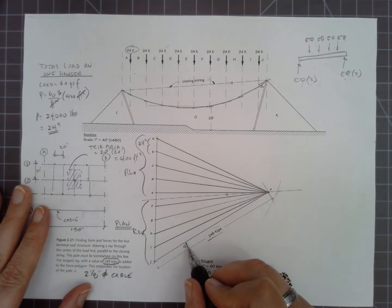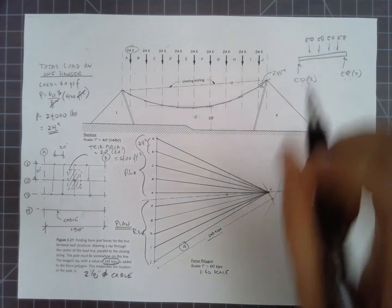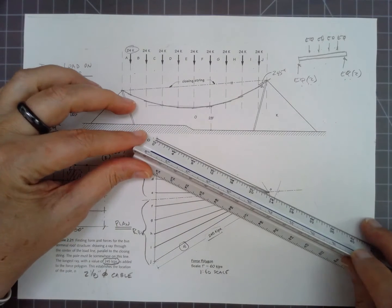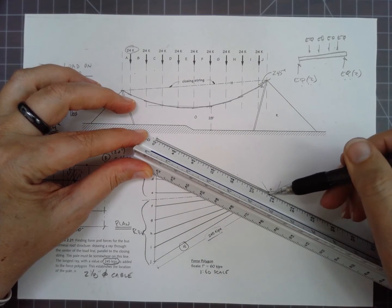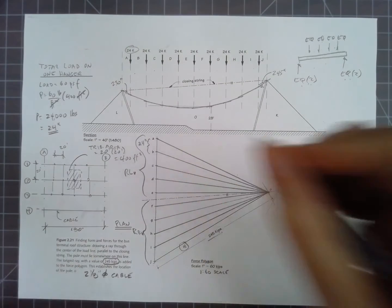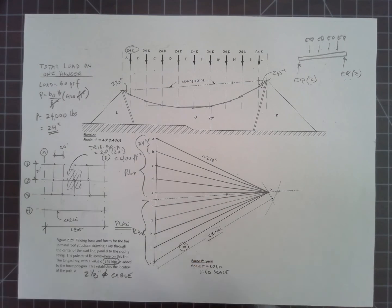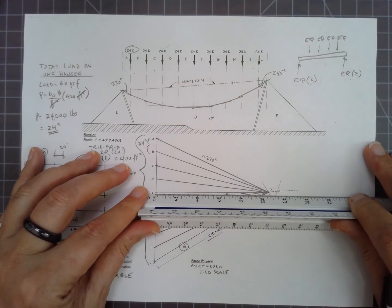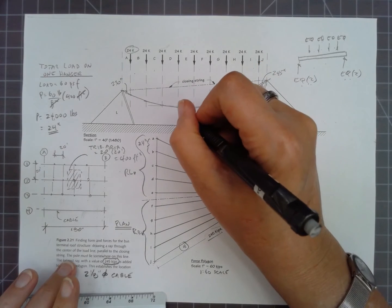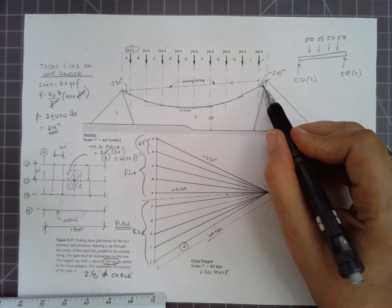The maximum member force is in segment OJ, which is at the very end here, so this is 245 kips. The force that's actually on the opposite side scales to about 230 kips, and then it varies in between with a minimum at the middle. So it looks like EO comes out to about 210 kips, and it gets higher as we go up on the string.